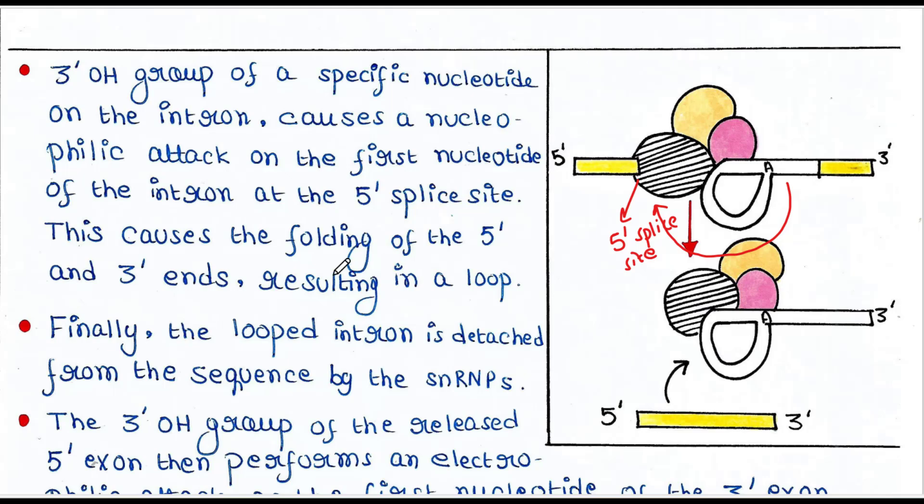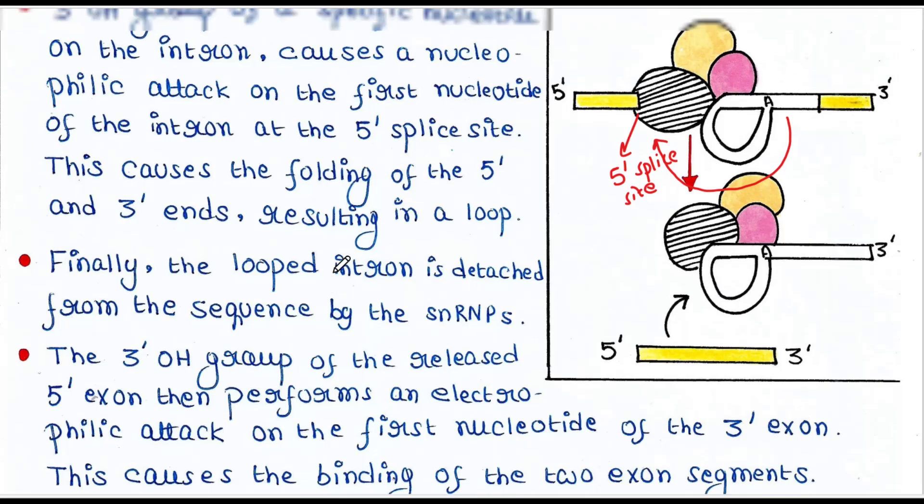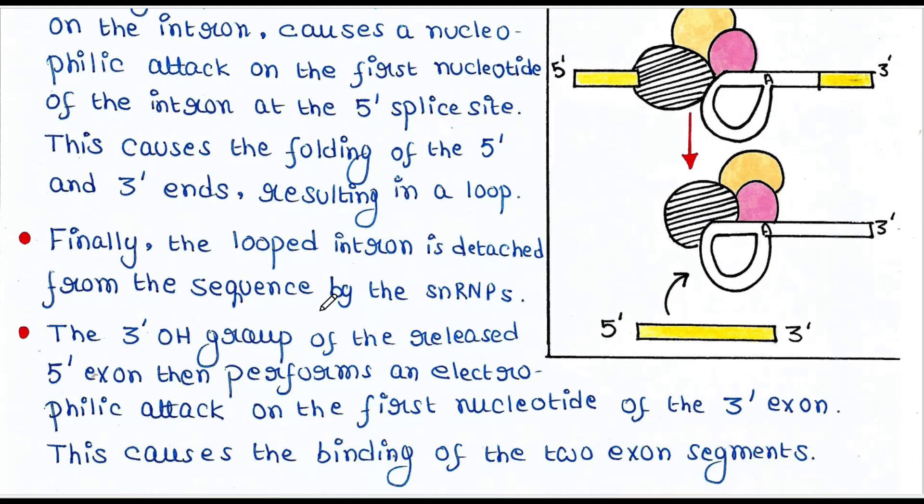Finally, the looped intron is detached from the sequence by the snRNPs. The 3' OH group of the released 5' exon performs an electrophilic attack on the first nucleotide of the 3' exon. This is the first nucleotide of the 3' exon. This attacks this. This is the electrophilic attack.